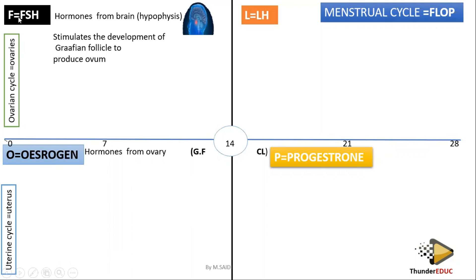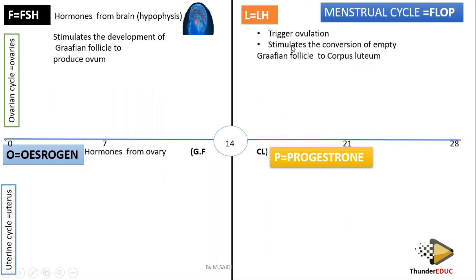Follicle-stimulating hormone — from its name — is the hormone which stimulates the graafian follicle. This hormone stimulates the development of the graafian follicle. Then you have luteinizing hormone — this one triggers ovulation. When you talk about trigger, it means that when you touch the trigger of a gun, the bullet comes out. So this one triggers ovulation.